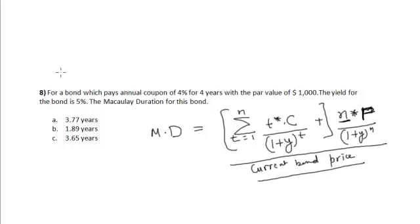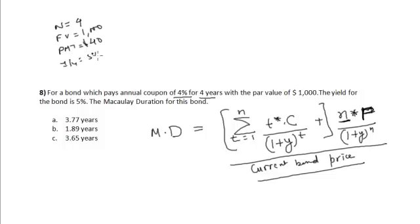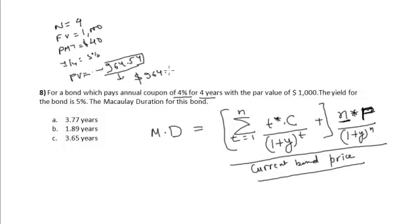In this case, the bond pays an annual coupon of 4% for 4 years, so n equals 4, the face value is $1000, PMT equals $40, and the yield y equals 5%. Solving this using a financial calculator, we get the present value of the bond to be $964.54.